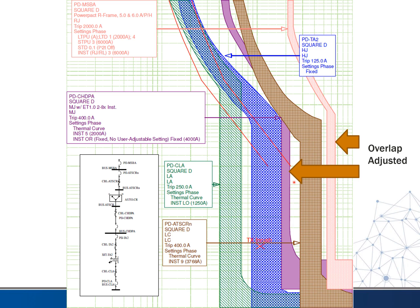How exactly do we do that? You see in these boxes all the different settings you have for the different breakers. For this first one, the STPU — short time pickup — was set to five. When I adjusted it to three, that slid this curve out of the way of the other breakers. Similarly, I adjusted the instantaneous setting on the other breaker and that moved its curve over. This isn't perfectly coordinated, but it's definitely much better coordinated than before. That's the purpose of these types of studies.